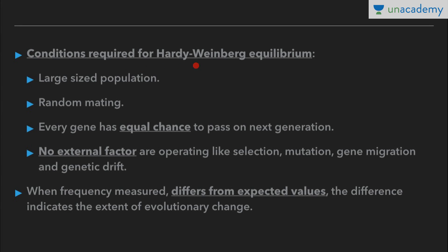Conditions required for Hardy-Weinberg equilibrium — when does P plus Q equal 1 apply? First, it should be a large-sized population. Second, mating should be completely random. Third, every gene has an equal chance to be passed to the next generation. Fourth, no external factors should be operating, such as selection, mutation, gene migration, or genetic drift.